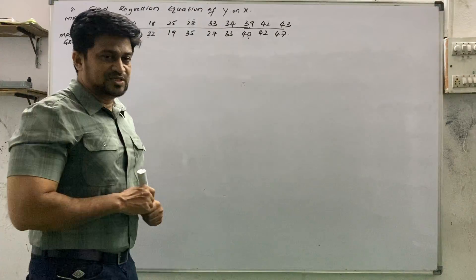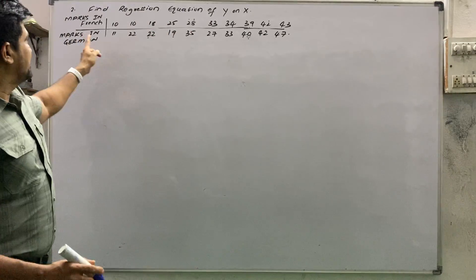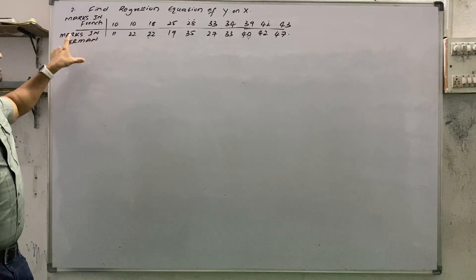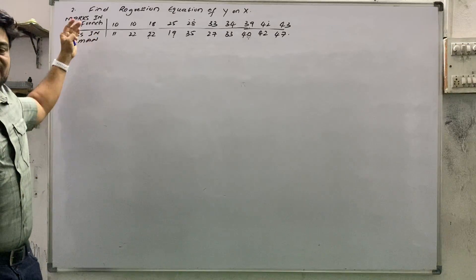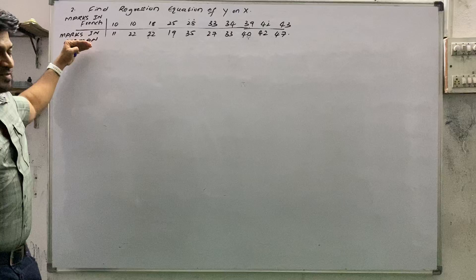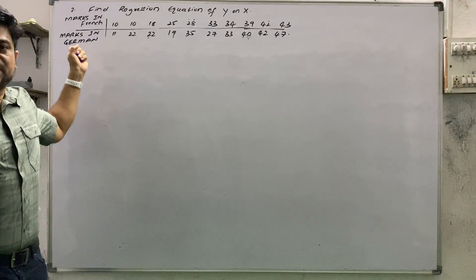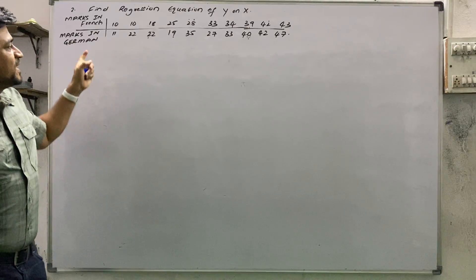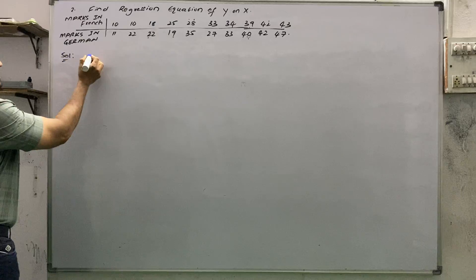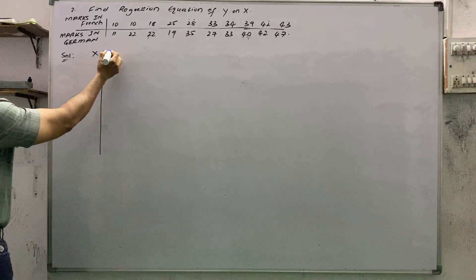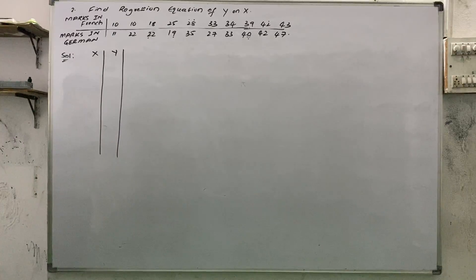Whenever you find a regression equation question, two variables will be given — for example, marks in French and marks in German, or blood pressure readings, or marks in statistics and mathematics. We always consider two variables and label them as capital X and capital Y.